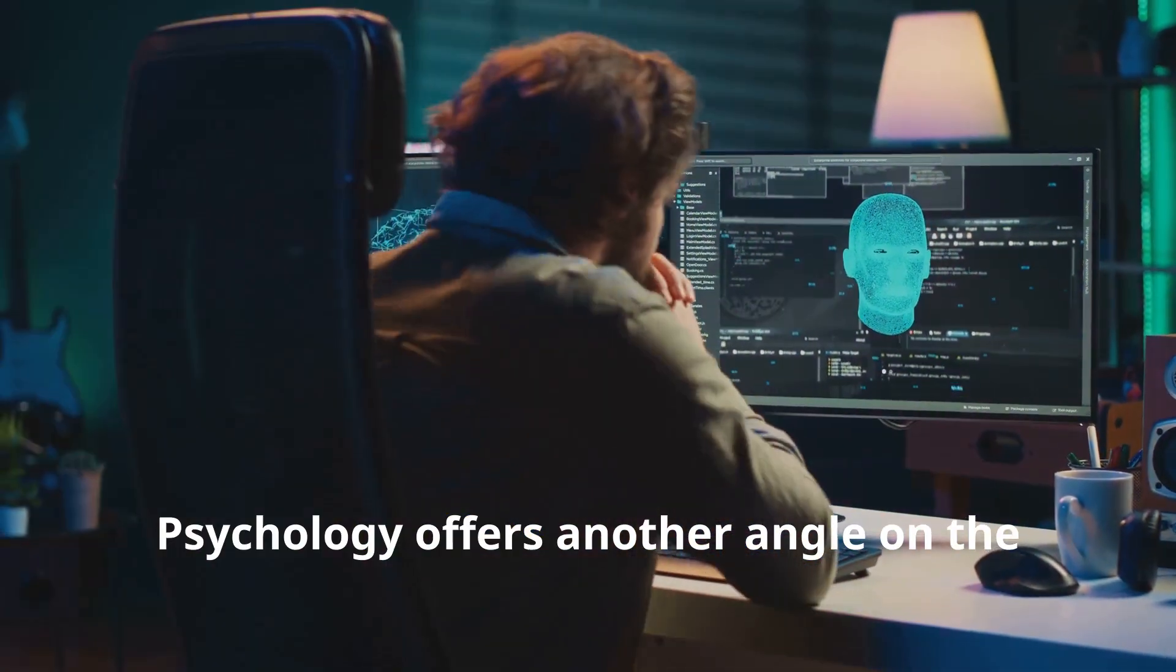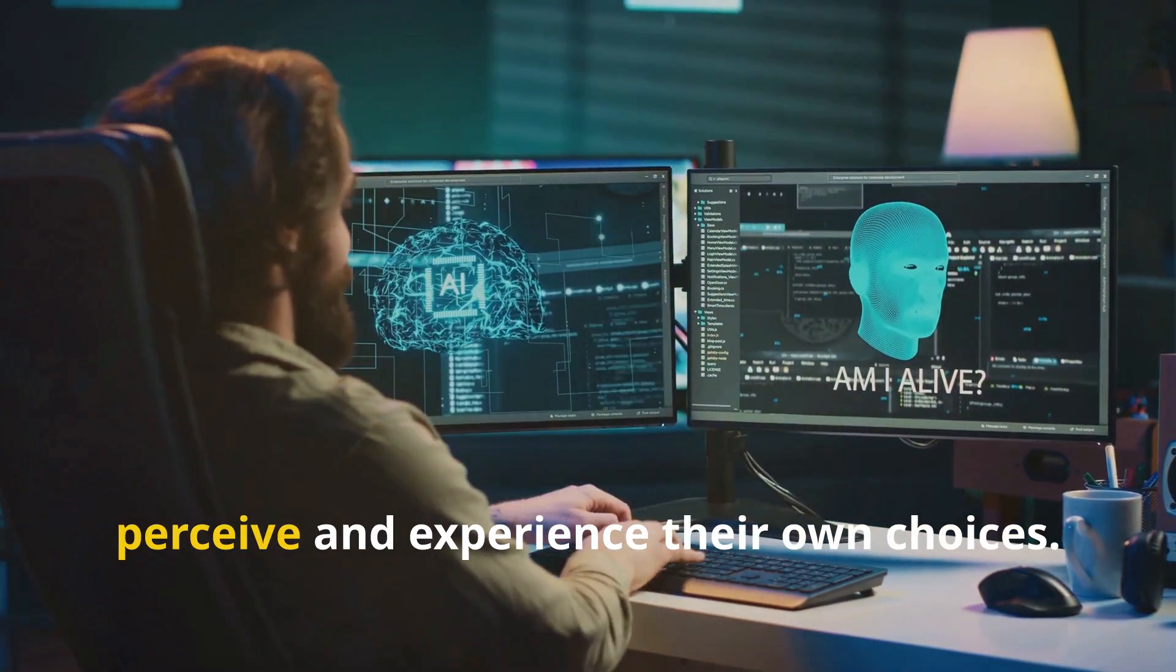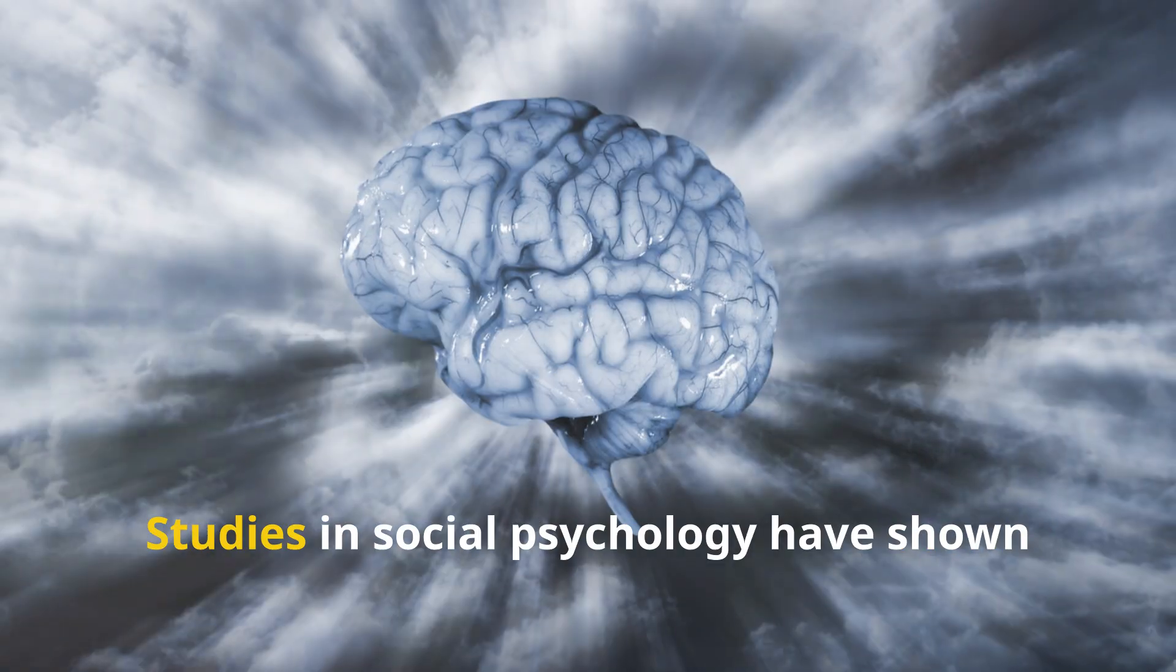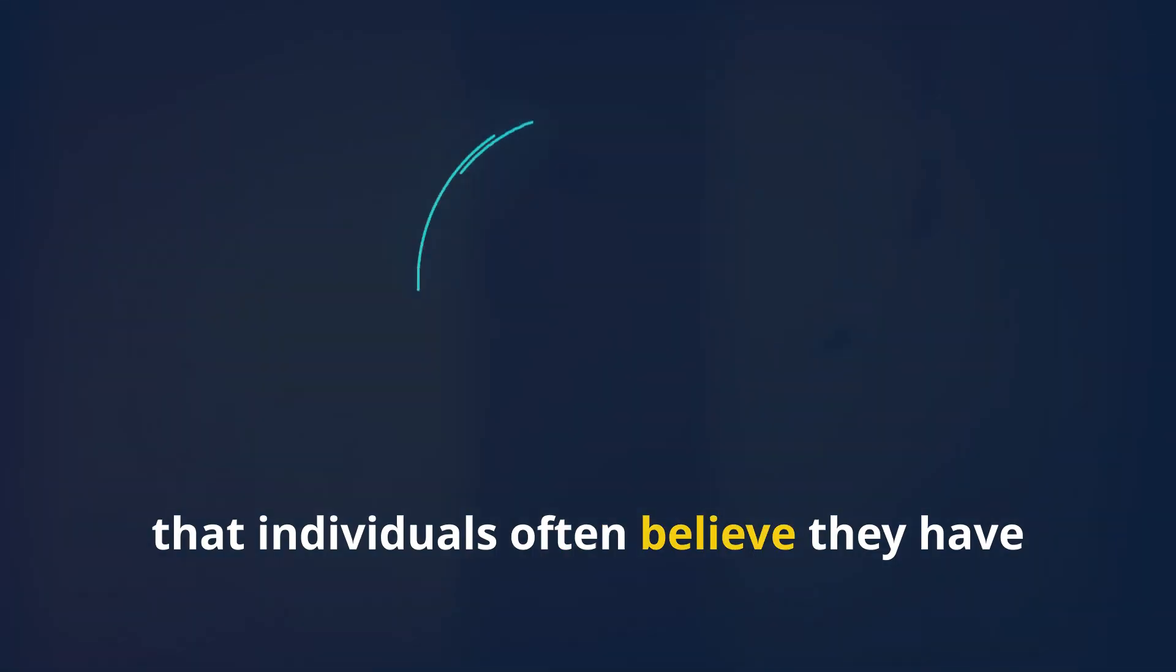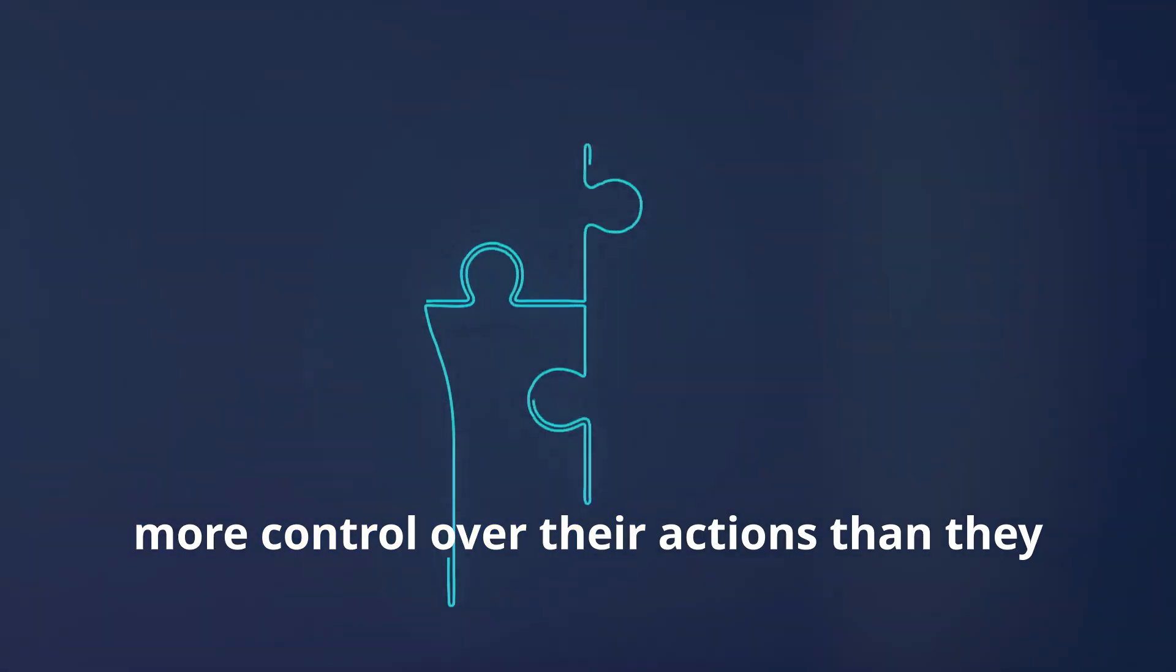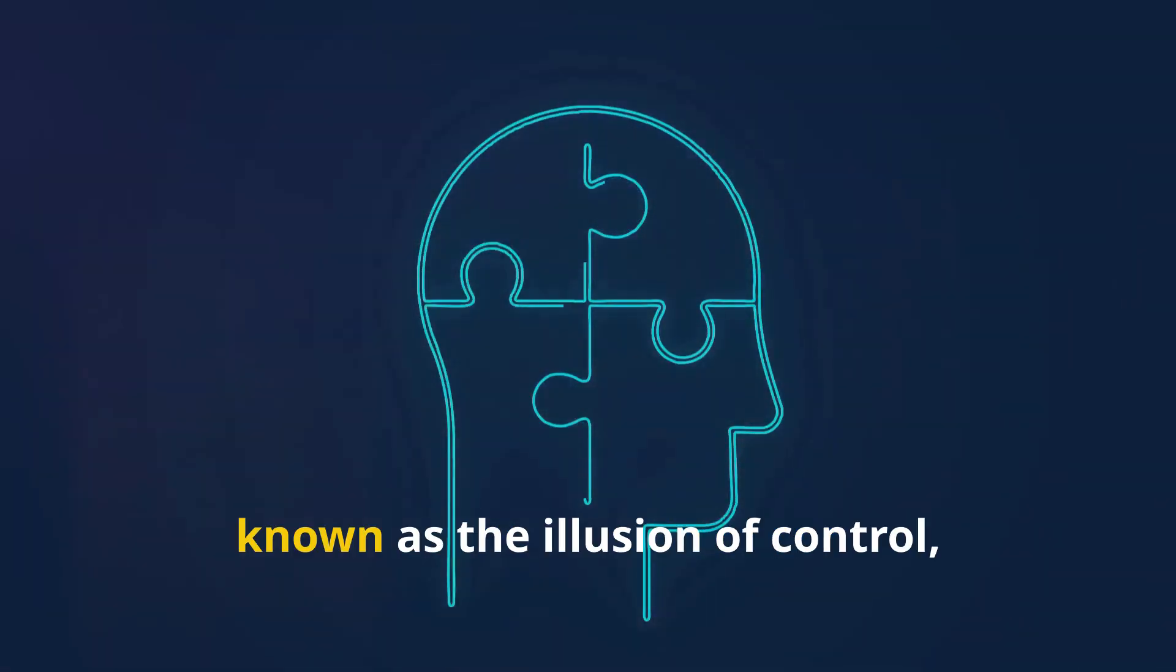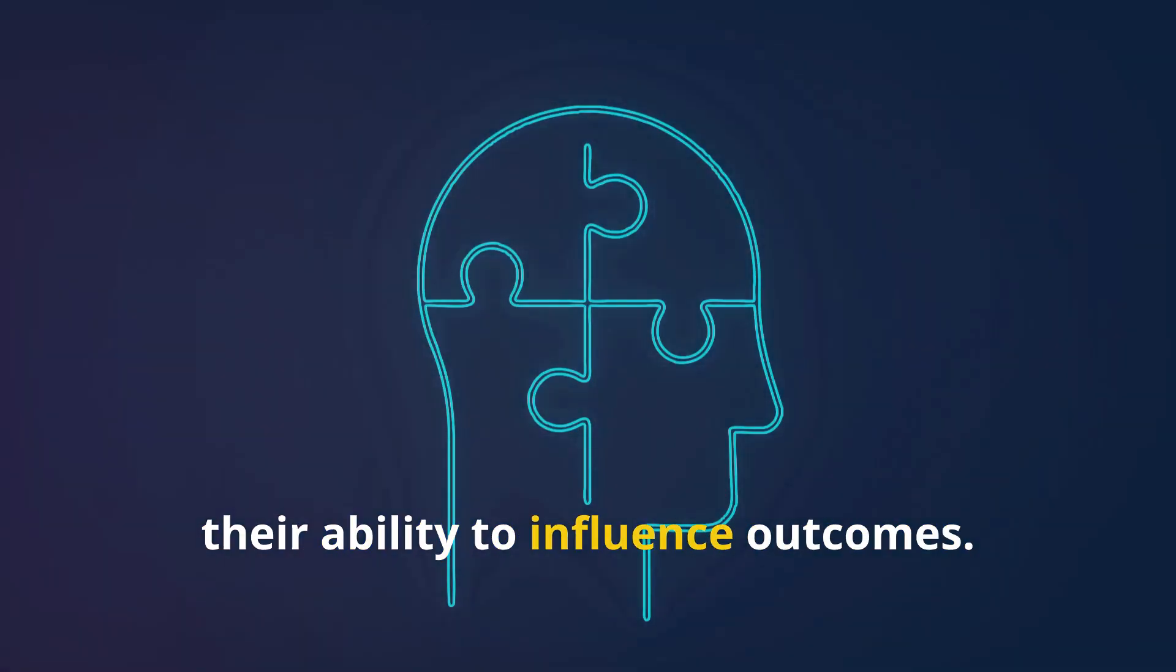Psychology offers another angle on the free will debate by examining how people perceive and experience their own choices. Studies in social psychology have shown that individuals often believe they have more control over their actions than they actually do. This phenomenon, known as the illusion of control, suggests that people may overestimate their ability to influence outcomes.